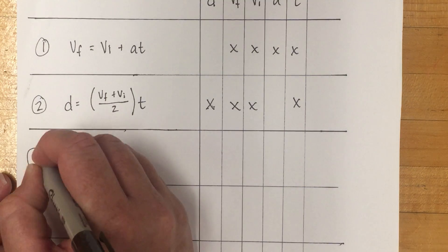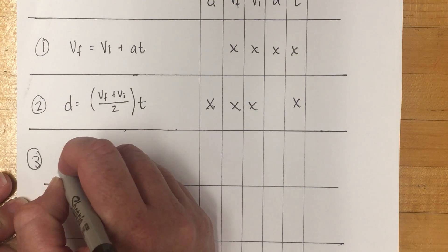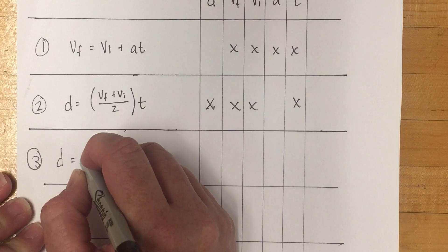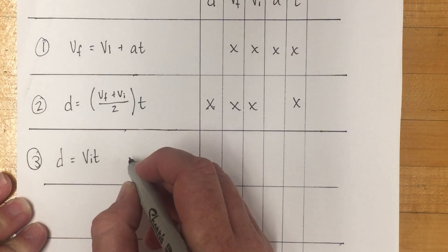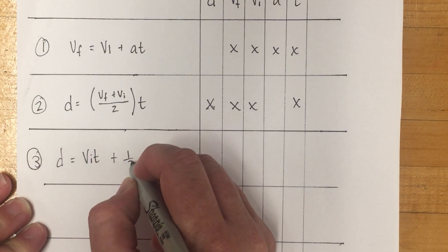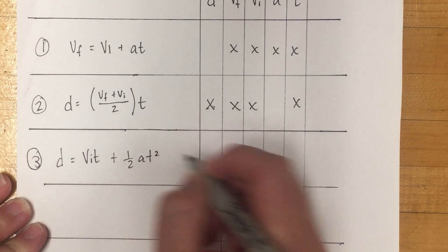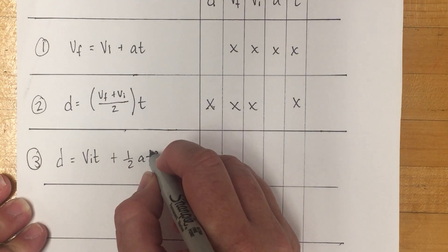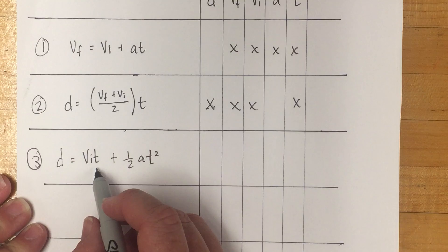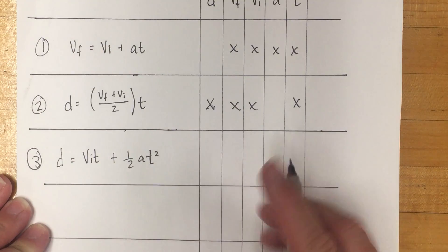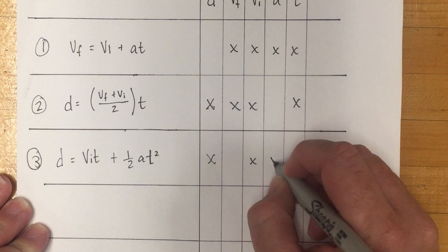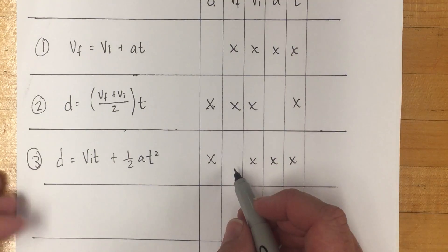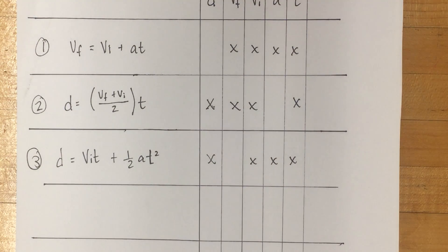Equation three is one you'll use quite a bit. You have d equals vi t plus one-half at squared. So you see t in here twice. And so this one has d, vi, a, and t. You don't know what the final velocity is, but you don't need to know to use this one to solve.